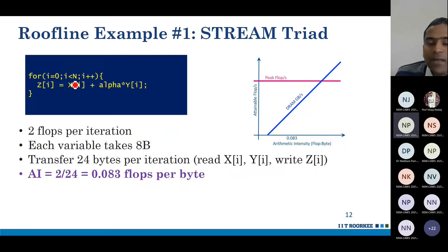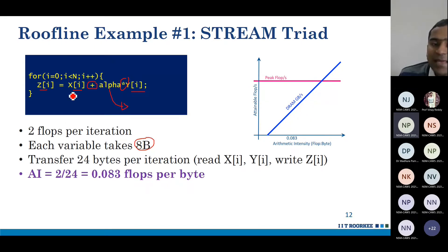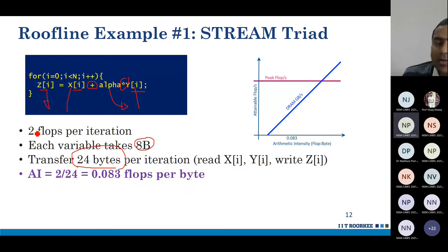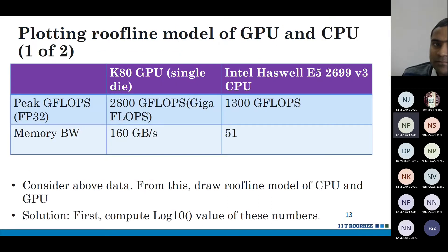Consider a DAXPY loop: in each iteration there are two floating point operations — one addition and one multiplication. The scalar alpha resides in a register, so no memory access for it. Variables z, x, and y are double-precision arrays (8 bytes each). Each iteration reads x and y and writes z back, transferring 24 bytes. The arithmetic intensity is therefore 2 / 24 flops per byte.